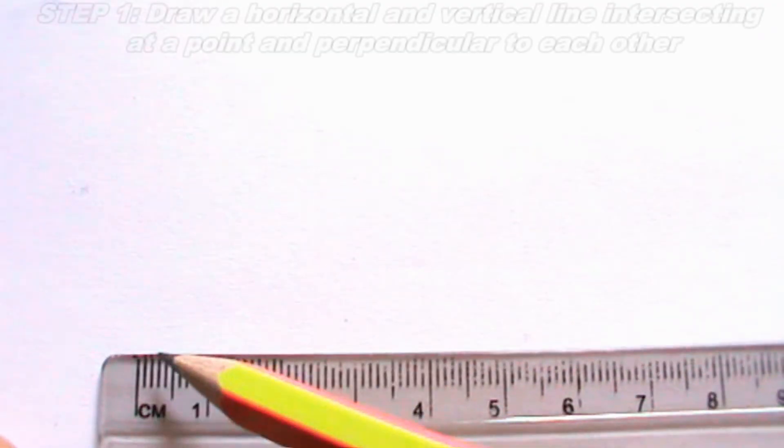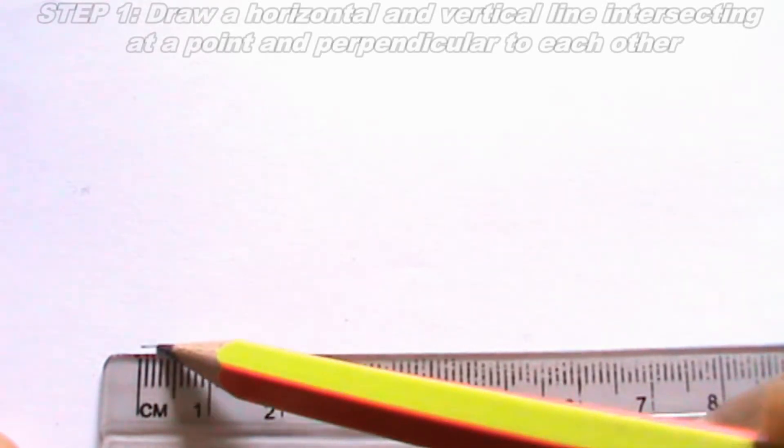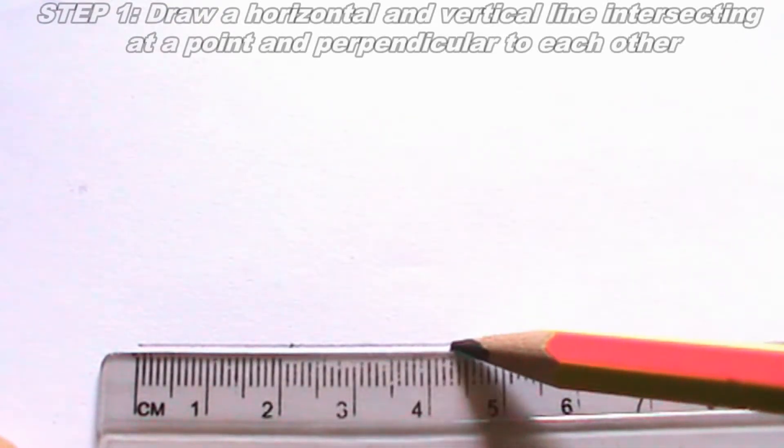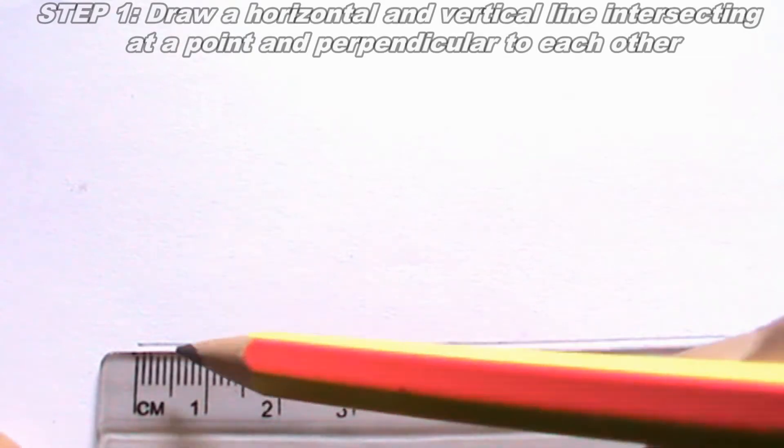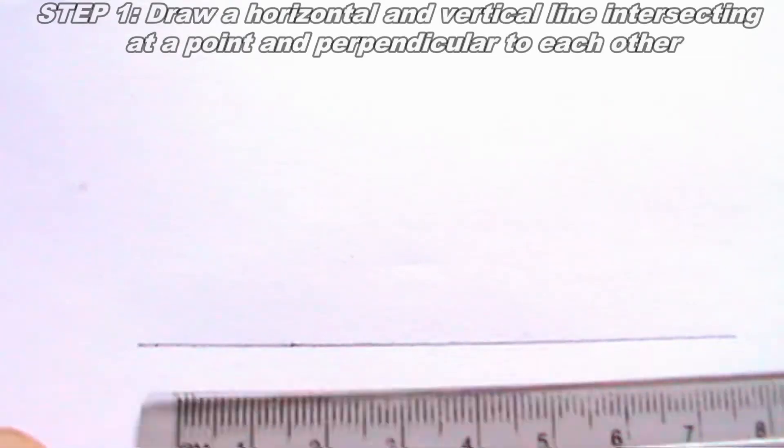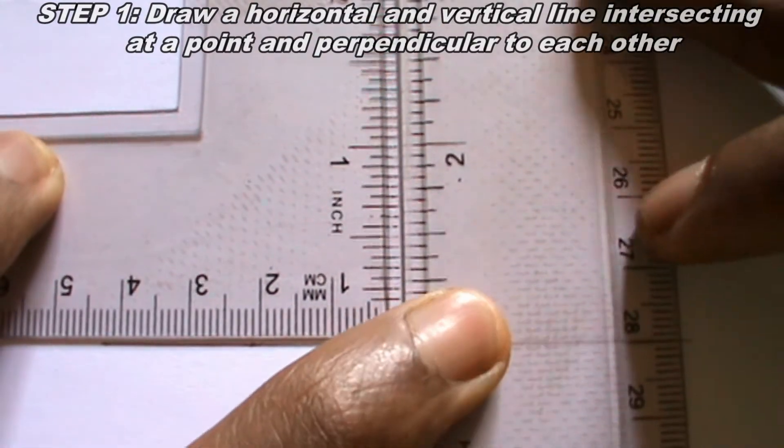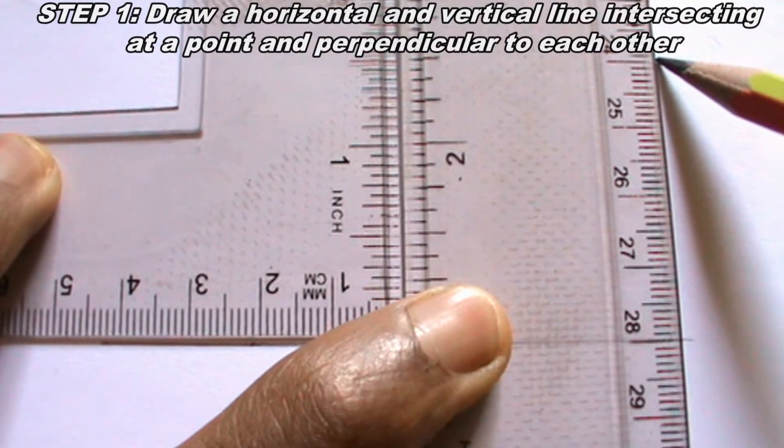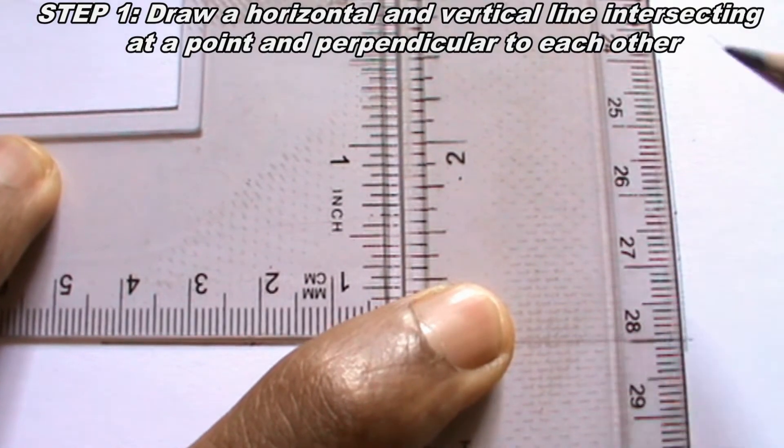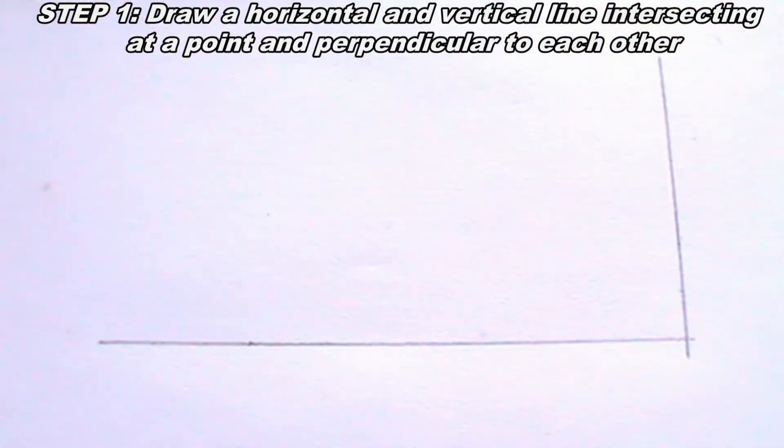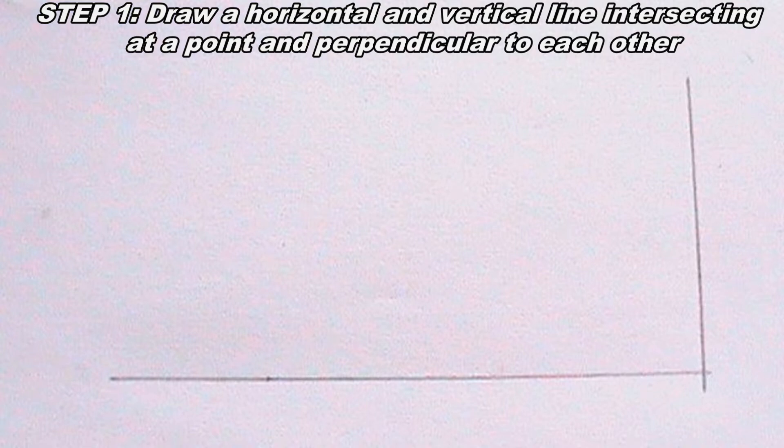Welcome to iTech Tutorial. To draw a parabola using envelope method, the first step to take is to draw a horizontal and a vertical line intersecting at a point and perpendicular to each other.